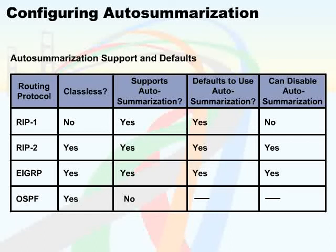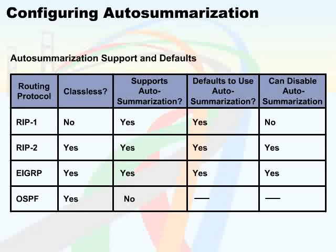One more important point to note is that the autosummarization feature affects only those routers that are directly connected to more than one classful network. It doesn't have any effect on routers connected to the same single classful network.